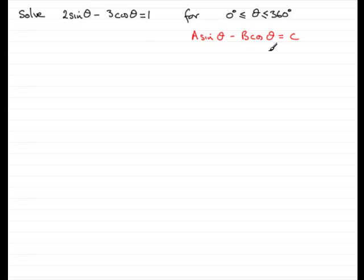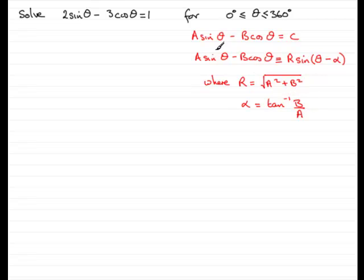So whenever you get equations like this, what we do is we look at the left-hand side of the equation. That is A sine theta minus B cos theta. Now, expressions like this can be written in another form. And that form is another constant, often referred to as R. And for this one, it will be sine of the angle, in this case theta, minus another angle, alpha. And it can be shown that R is always equal to the square root of A squared plus B squared. And alpha is always the inverse tan of B divided by A.